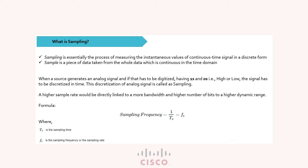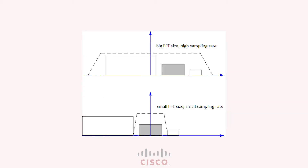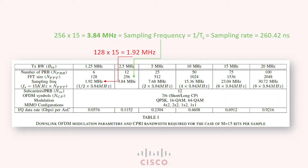Now at fronthaul, to recover the entire data transmitted, the receiver must take NFFT samples per OFDM symbol. The base channel bandwidth considered for LTE is 2.5 megahertz. To recover this data, which is sent as IQ bitstream using CPRI fronthaul, the receiver must take NFFT equals 256 samples per OFDM symbol.